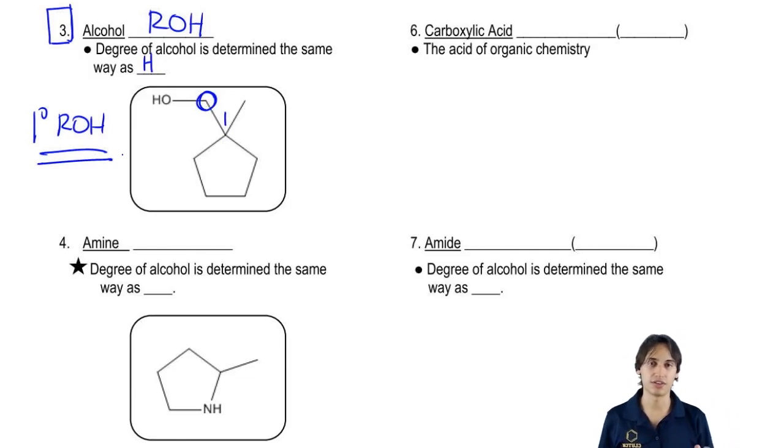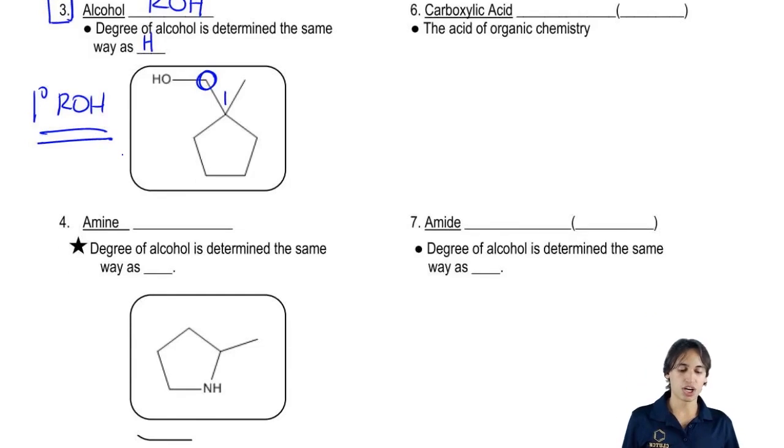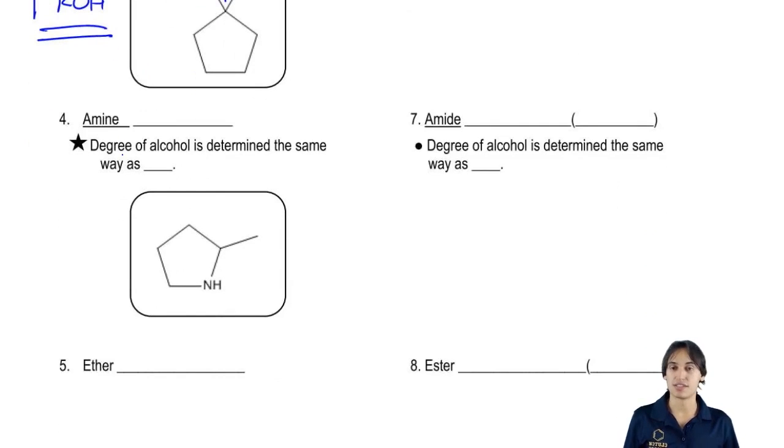I'm going to give you guys more practice with this later. Then let's talk about the next functional group, amines. So amines, the way that they work is that they actually have carbon groups directly attached to the N which means that there's a lot of different types of amines that you could have.